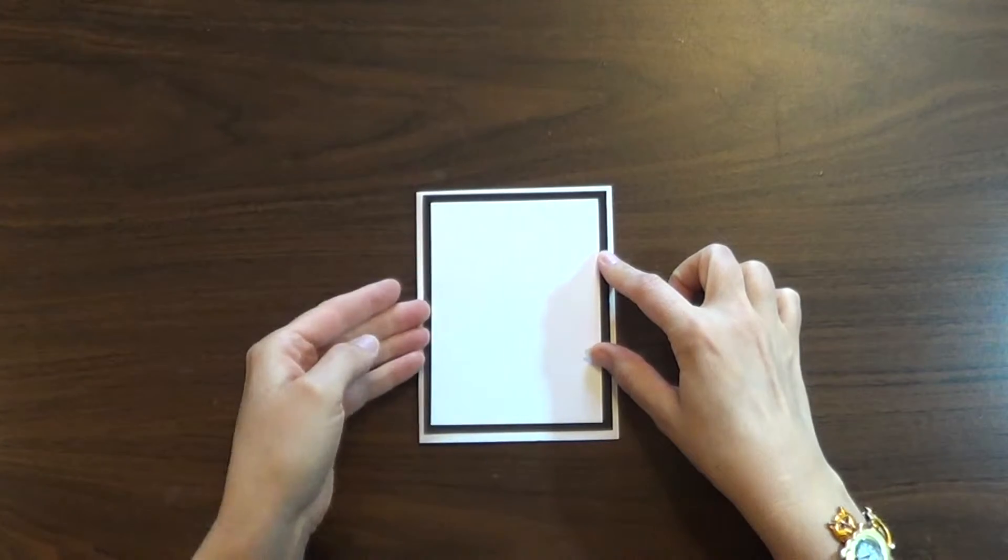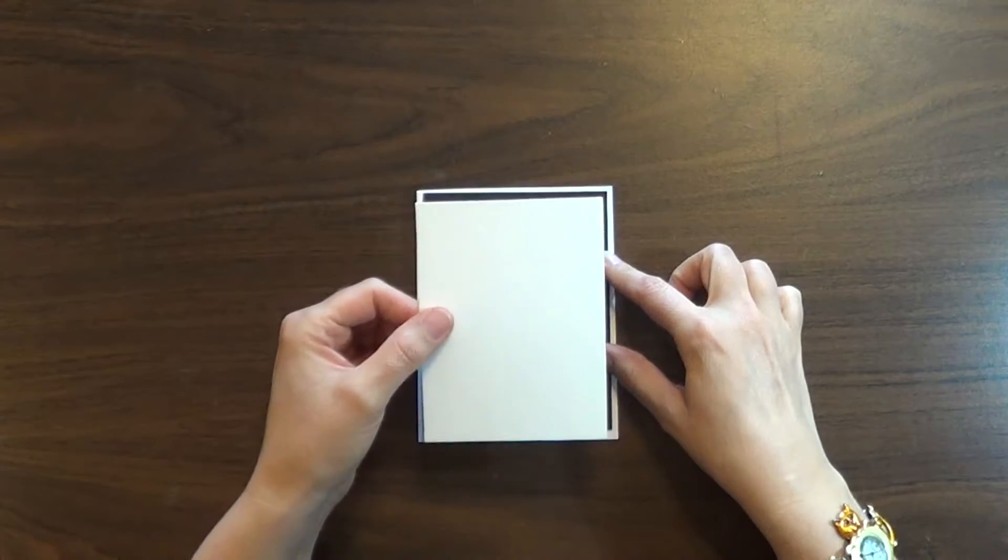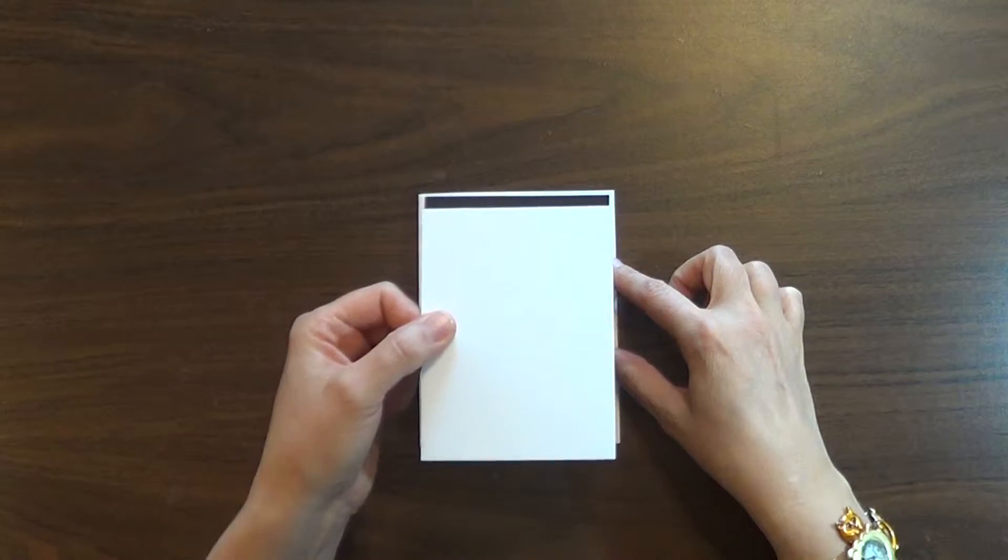But you can actually get five of this size from one sheet of cardstock. And this is often the size that you're going to be stamping on.